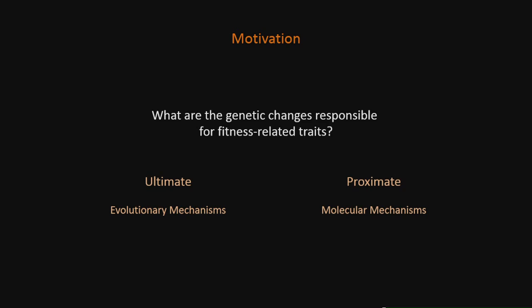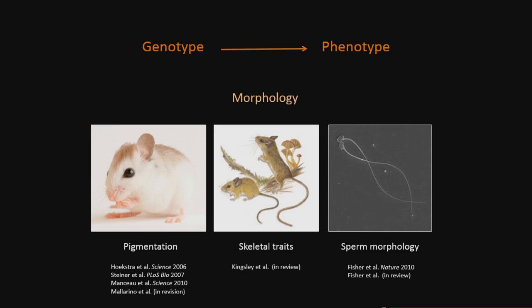In recent years there's been a lot of successes in making connections between genotypes and adaptive phenotypes, but the vast majority of cases involve morphological change. In our own lab, even in non-model species, we've identified genes and even mutations involved in camouflaging color in natural populations of mice. We've also been working on skeletal traits — identifying genes that give rise to differences in tail length associated with an arboreal lifestyle. And most recently, we've identified genes contributing to differences in sperm morphology, which affects sperm swimming performance and ultimately reproductive success.